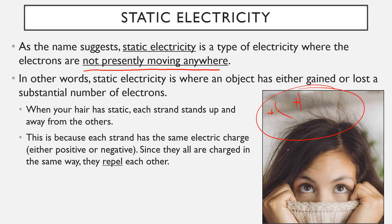These hair strands are all being repelled from one another — repelled away from the bulk of the rest of your hair, so they're being pushed upwards. While they're upwards, they're still also all pointing away from one another because they're individually each repelled from each other. Since they're all charged in the same way, they repel each other. That's why we have issues with frizzy, staticky hair.